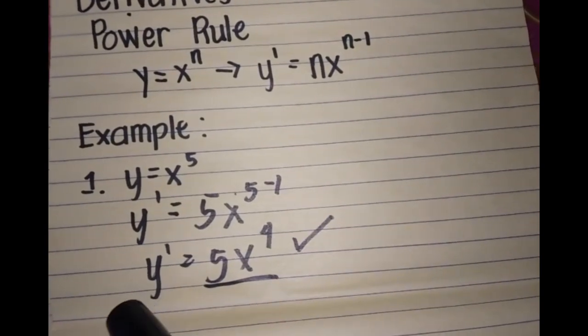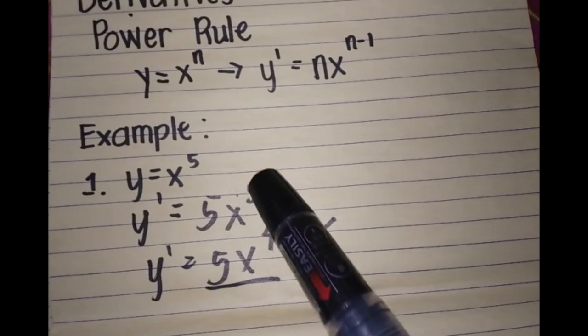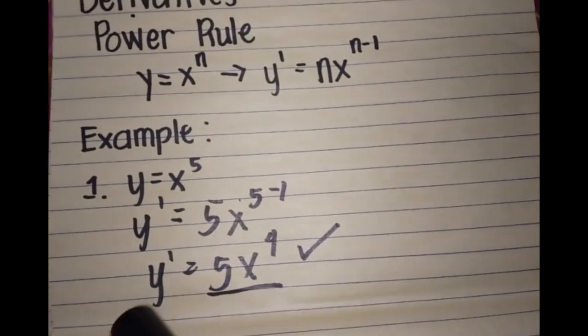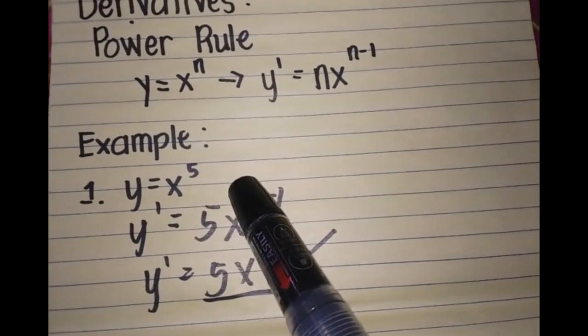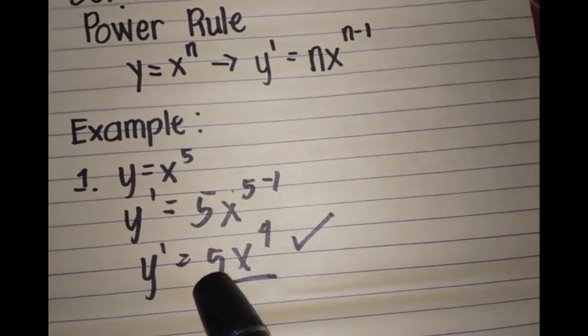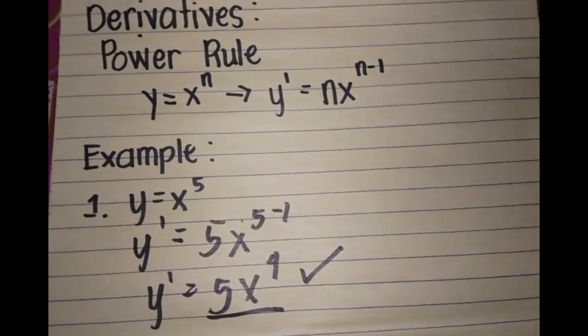To simplify, we have y prime equals 5x raised to 4, since 5 minus 1 equals 4. Therefore, the derivative of y equals x raised to 5, using the power rule, is 5x raised to 4. That's all.